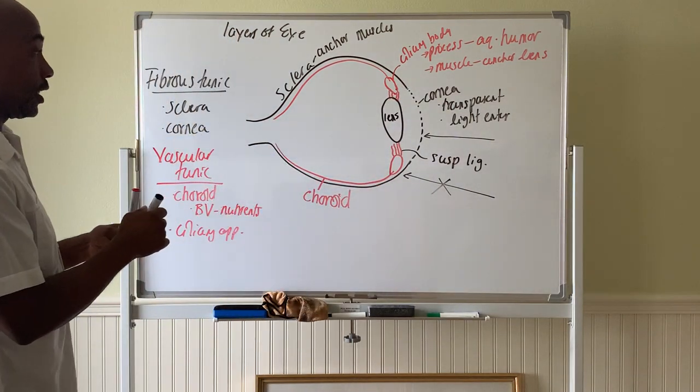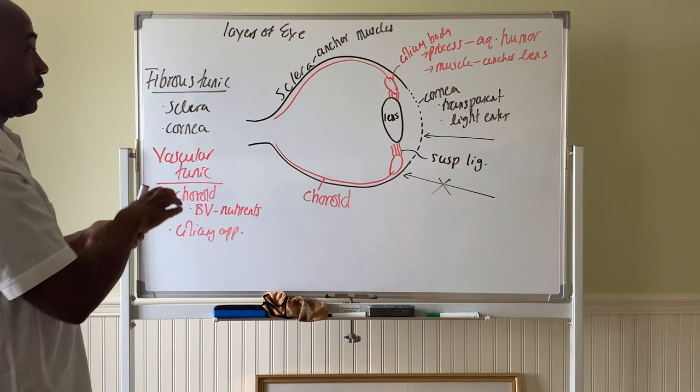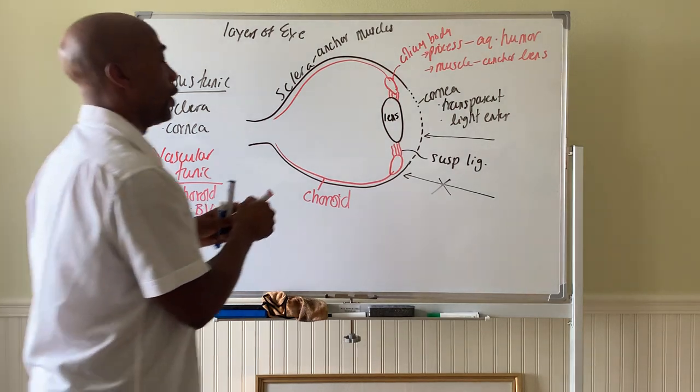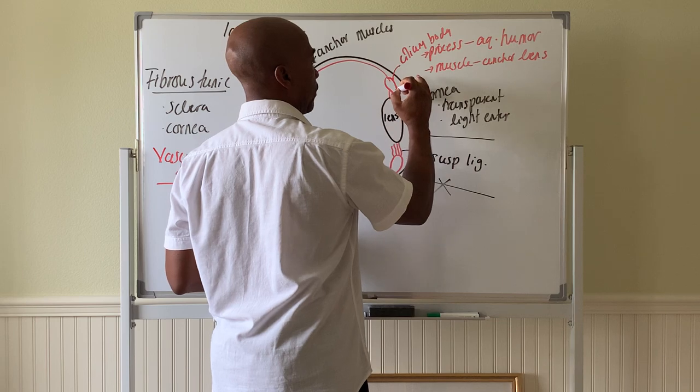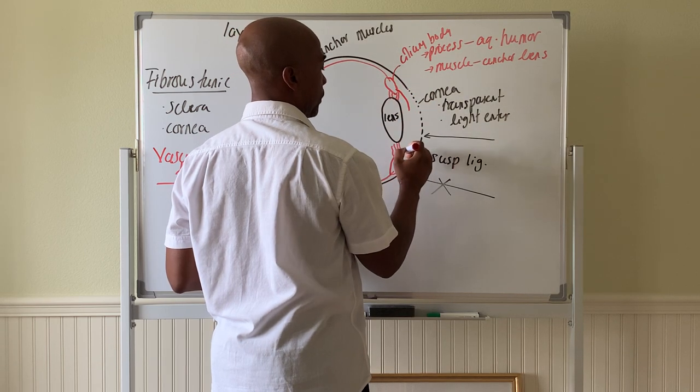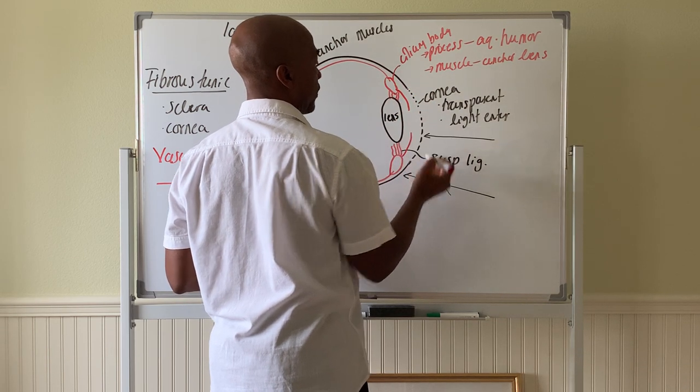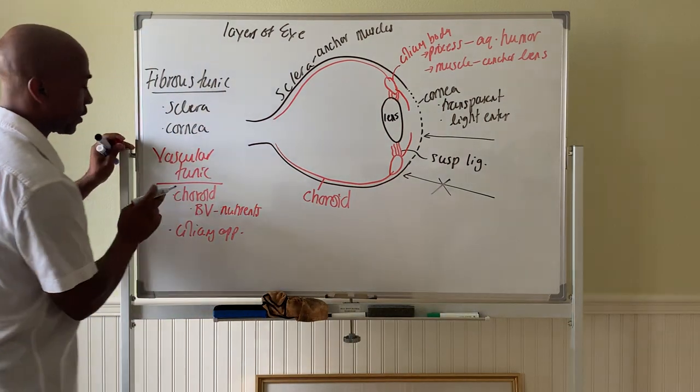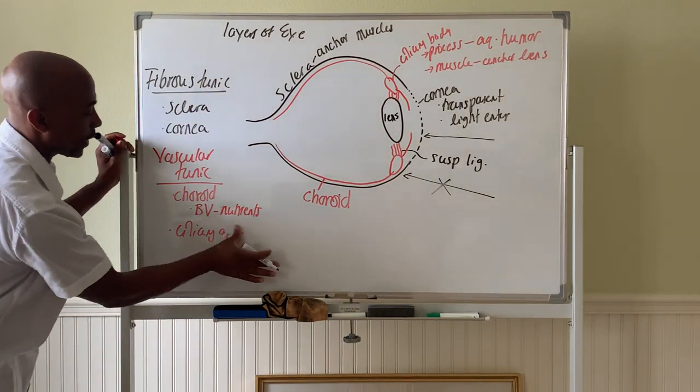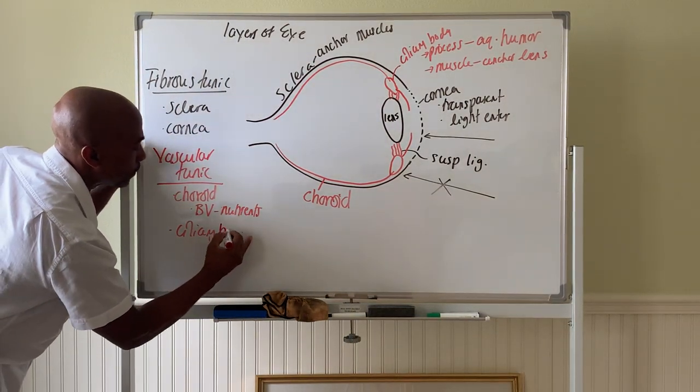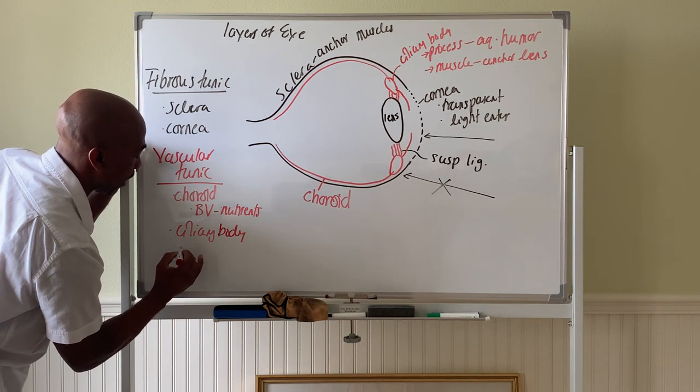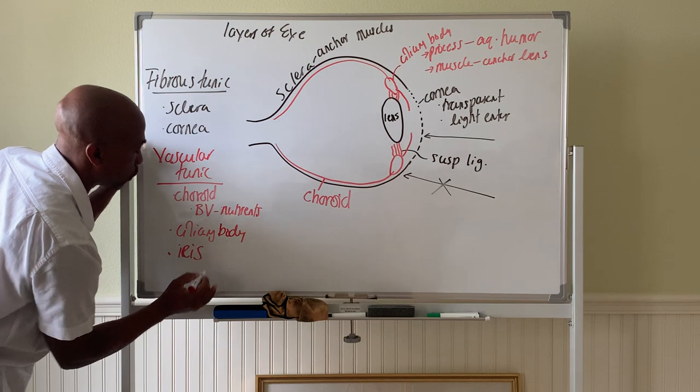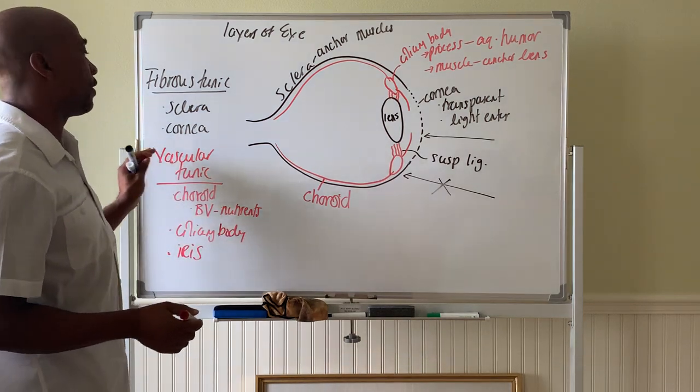And then continuing with the, still the outer layer. After you pass the ciliary body, you then come to another structure called the iris. It's also part of the layer. So you see a choroid ciliary body and the iris. Those are the three parts of the vascular layer.